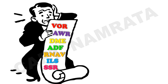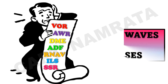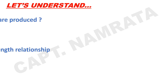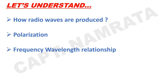We have different types of radio aids and radar systems such as VOR, AWR, DME and so on. To understand these systems clearly, we need to first understand the behavior of radio waves and pulses, as this is the basis of all radio aids and radar systems. In this particular video, we will be studying about how radio waves are produced, what is the meaning of polarization, and what is the relationship between frequency and wavelength.